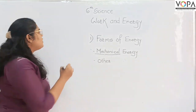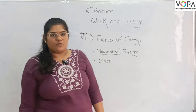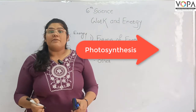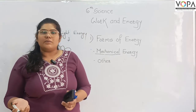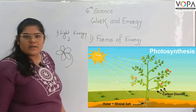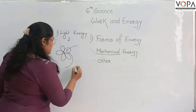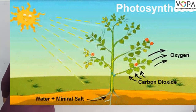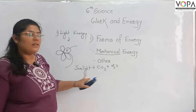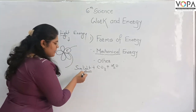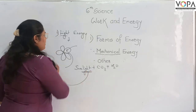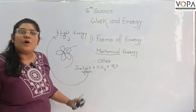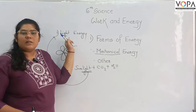Now let us look at the other forms of energy. First, what is light energy and how do we use it? Plants use light energy for photosynthesis. In photosynthesis, sunlight plus CO2 plus H2O are taken in by plants to make food. So light energy is one of the forms of energy, which plants use for making food.